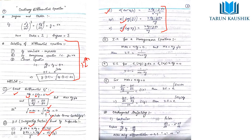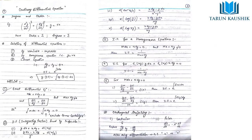For a homogeneous equation, the power of all terms is equal — for example x², xy, y² all have degree 2. If you find such an equation in the given form, the integrating factor will be 1/(Mx + Ny). The significance of this integrating factor is that after multiplying the equation by it, the equation becomes exact. Then do the same procedure: integrate M with respect to dx and N with respect to dy, excluding terms that contain x in the second portion.